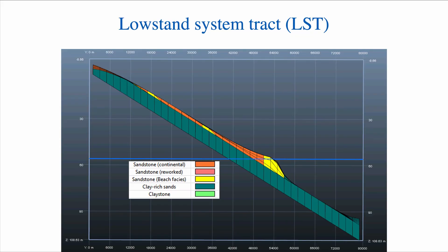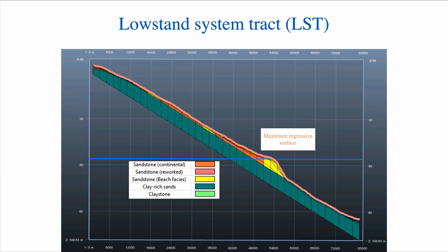During low stand, we indeed have a surface here that is of interest and it's known as the maximum regressive surface. That's when sea level went to its lowest. Part of the maximum regressive surface is the erosional unconformity, the sequence boundary, but also the correlative conformity on top of the low stand.